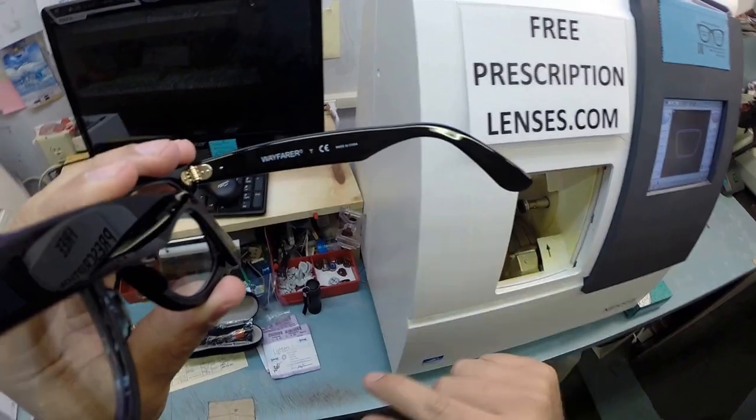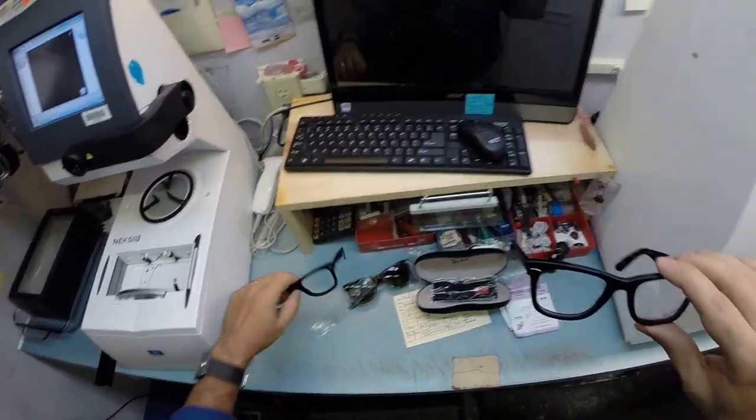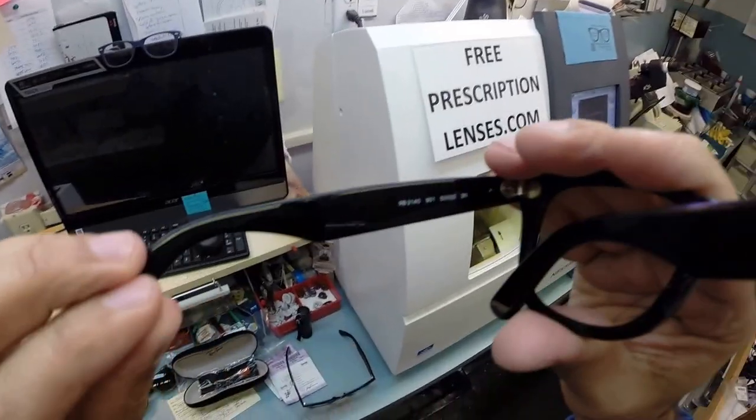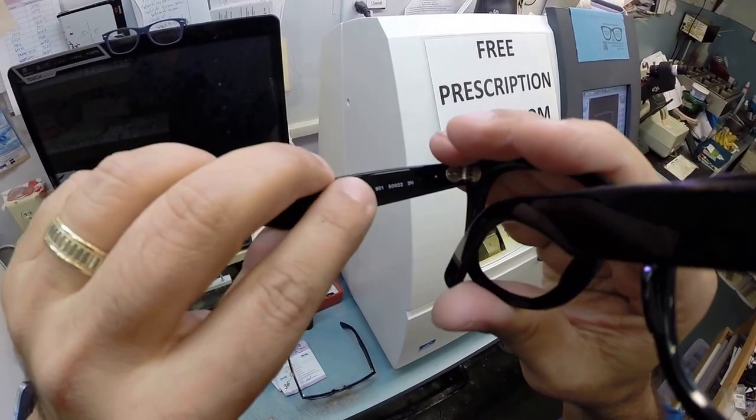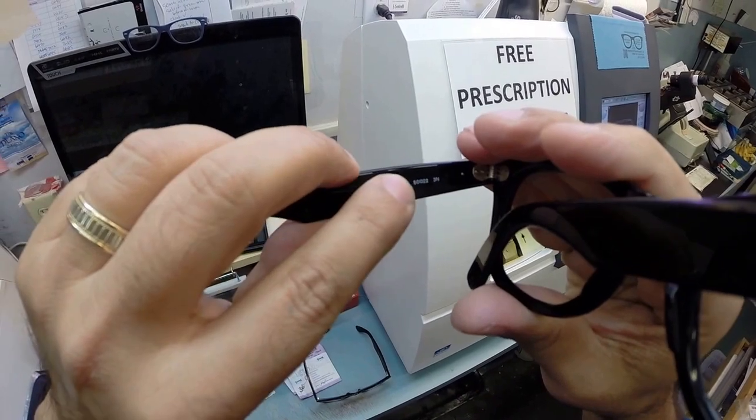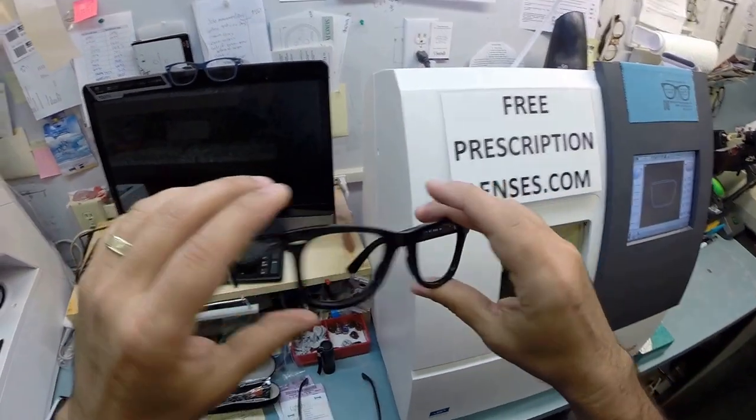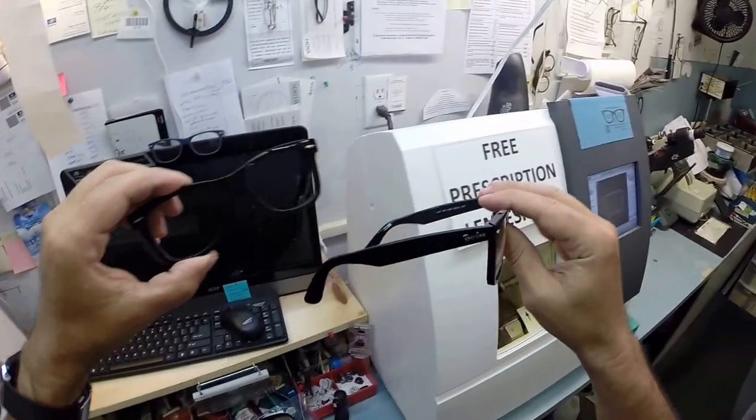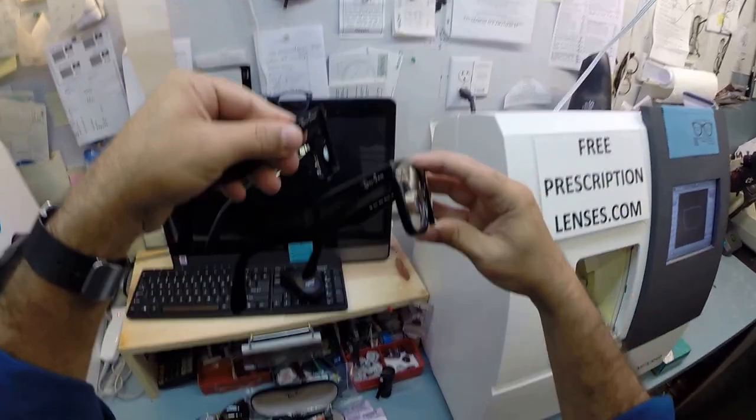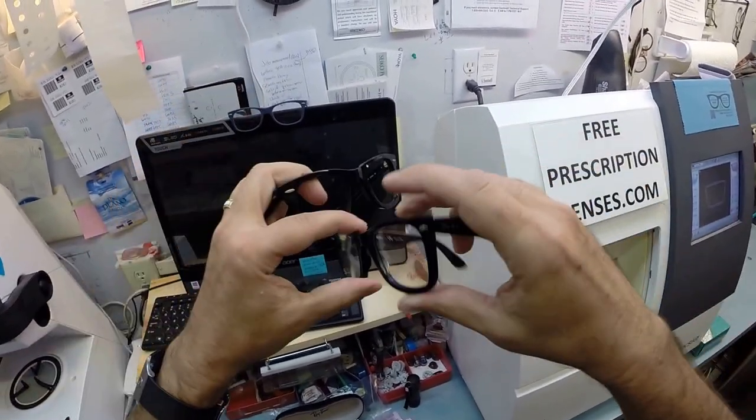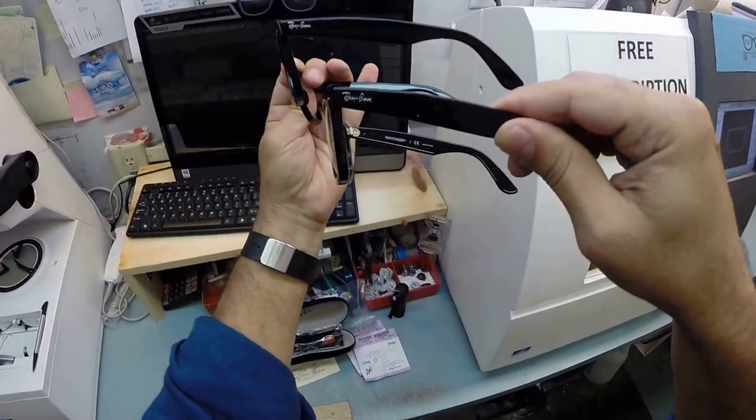This one happens to be made in China. It is modeled after the original Wayfarer, which is model number 2140 color 901, which is their classic shiny black. Again, 50 eye size with the 22 bridge. Almost identical frames. It's just one is made in Italy. The other one is made in China, along with your iPhone, iPod, MacBook,